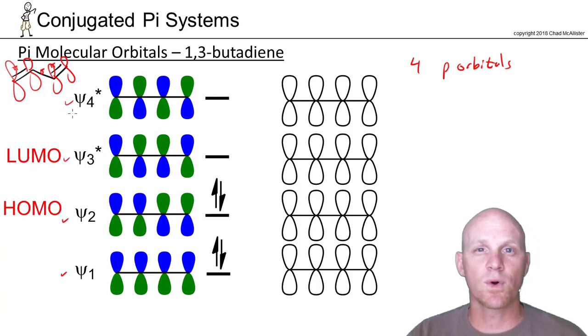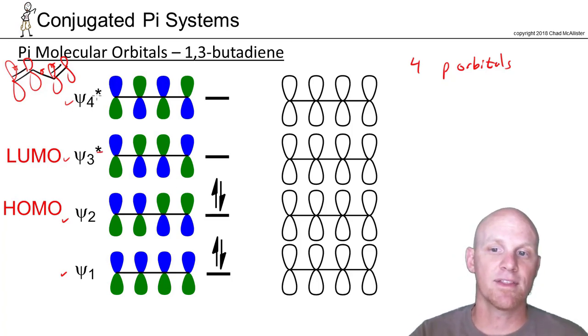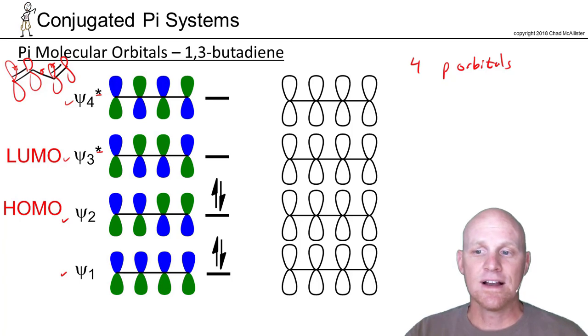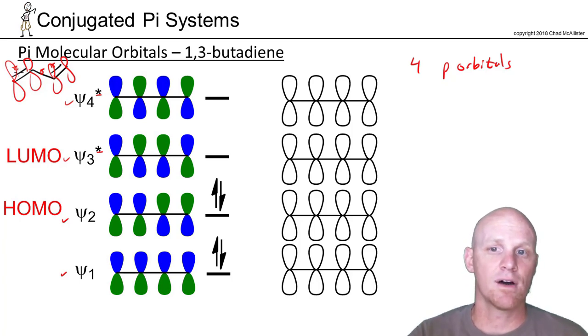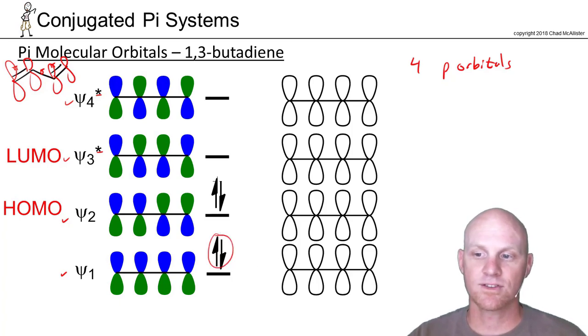And just like we said before, your lower half are bonding, your upper half are antibonding, signified by that asterisk. So in this case, you should also realize that we have a pi bond there and a pi bond there. That's two sets of pi electrons, two pairs. So we'll put two electrons here and two electrons here.